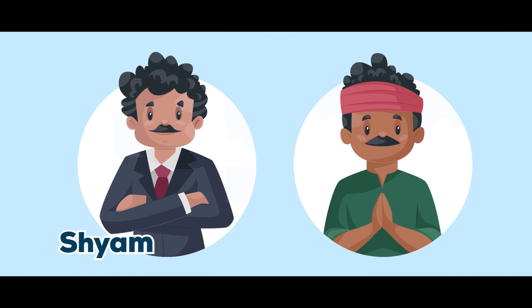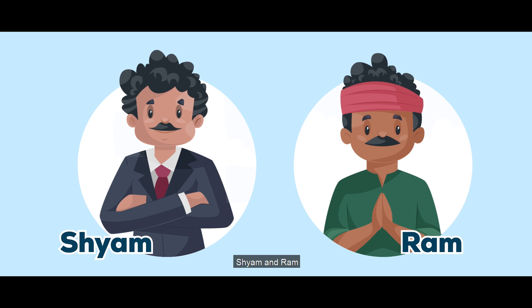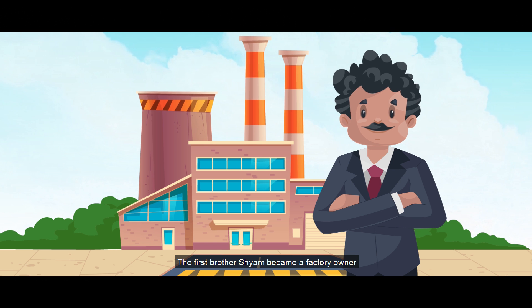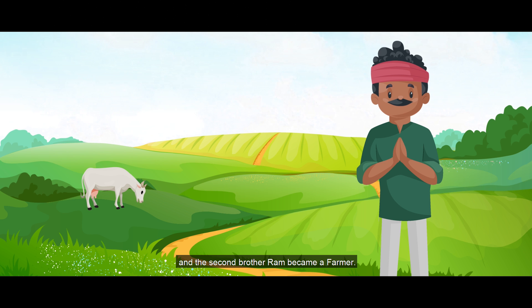There were two brothers, Sham and Ram. Both were very ambitious. The first brother, Sham, became a factory owner and the second brother, Ram, became a farmer.